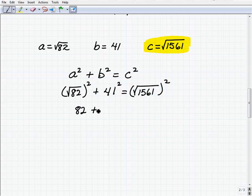So I have the square root of 82 squared plus 41 squared. Is that equal to 1561 squared? Okay. So we have 82 plus 41 squared is 1681. Is that equal to 1561? Okay. Well, clearly it's not because when you add these two up, there's no way that you're going to, it's going to be much longer than this side here.